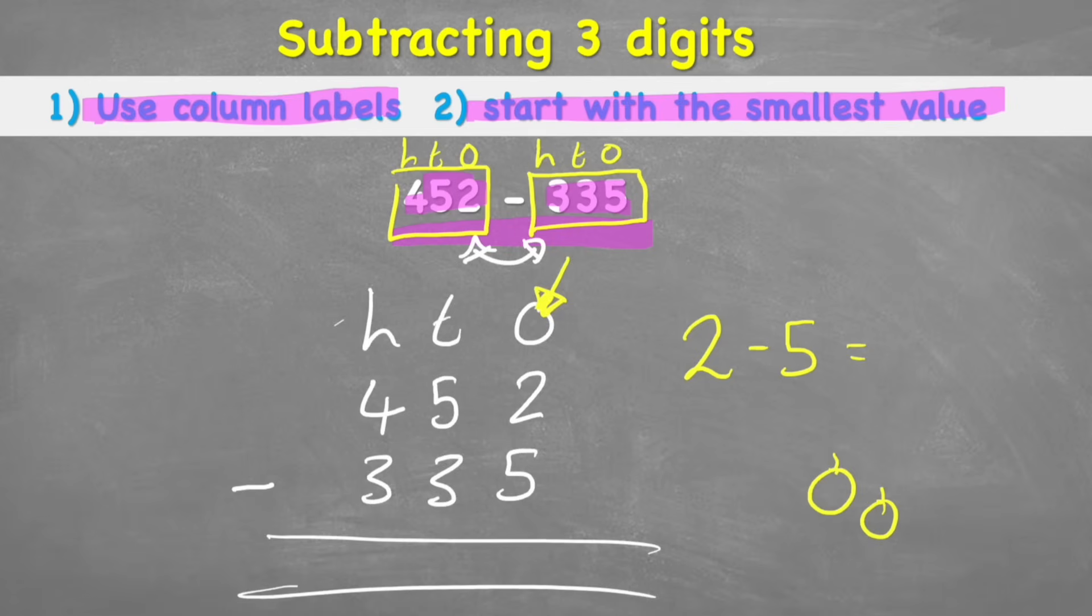So what can I do? Well, I've got to look next door because if I look in this 10s column, I can understand that this 5 is actually 50.